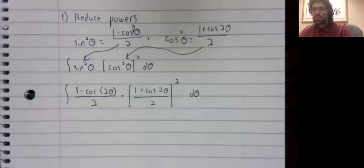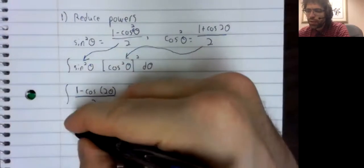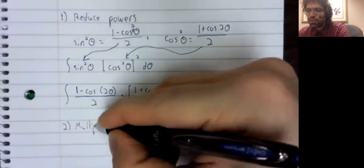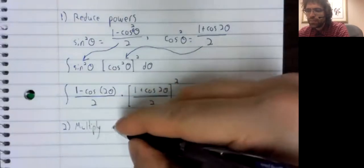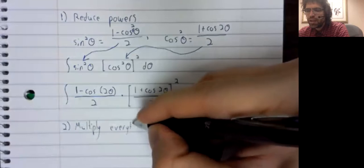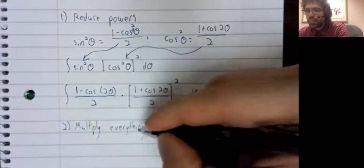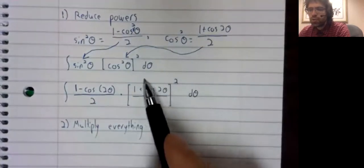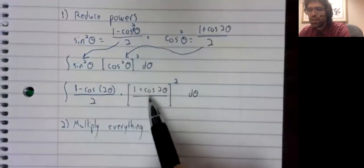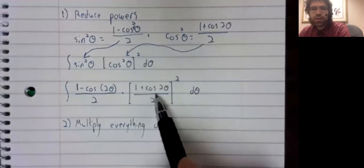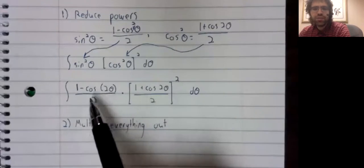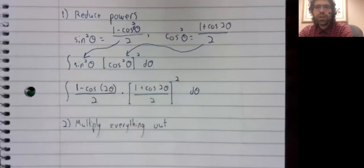Our next step is to multiply everything out. So first we square this, then we multiply the result of that squaring by this. I am going to do that off camera.